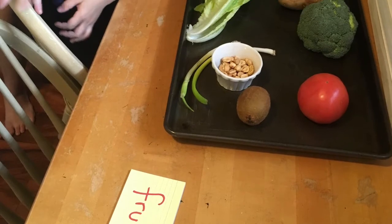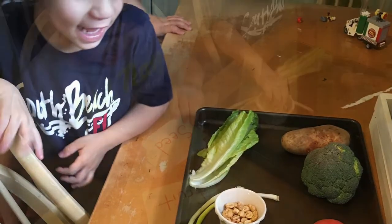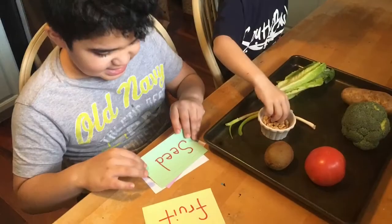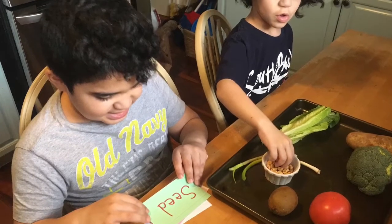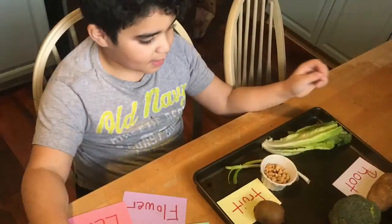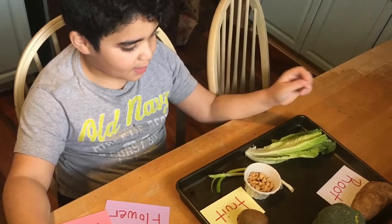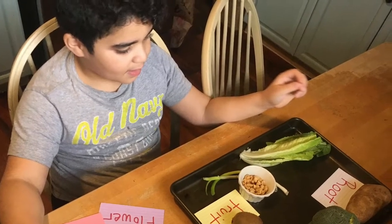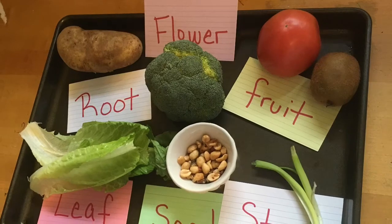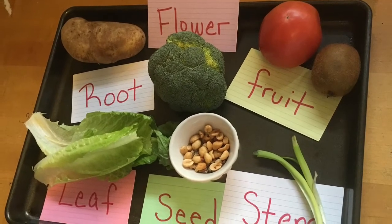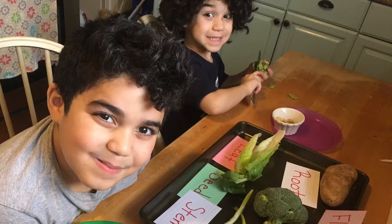Another awesome activity was to see what plants we eat. I gave them a tray full of plants that we eat and they had to put them in order by category — either the fruit family, flower family, or root family. They had a lot of fun doing this and then were able to enjoy and eat them.